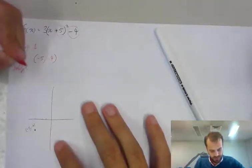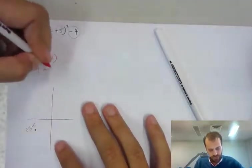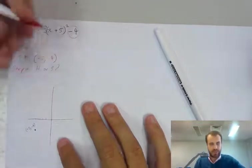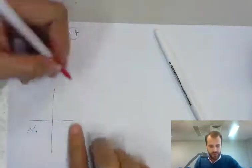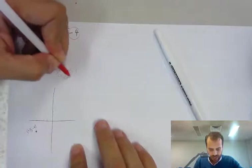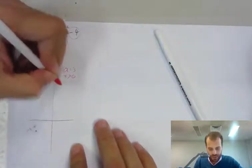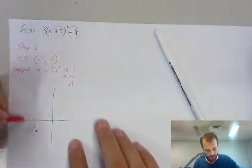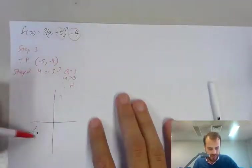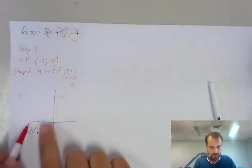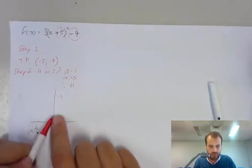Step 2. Happy or sad. My a value is 3, a is equal to 3, a is greater than 0. Therefore, happy. So it's going to go through like this. There are our roots. You can see we're going to have roots and we're going to have a y-intercept as well.